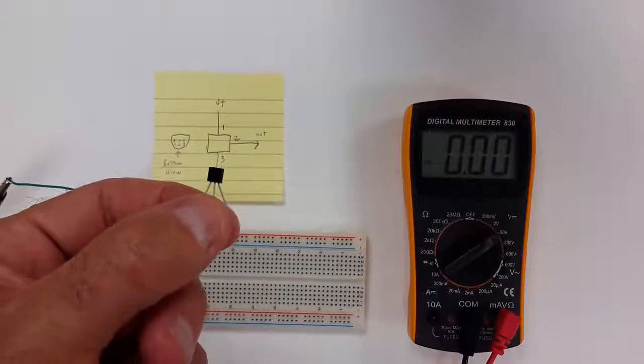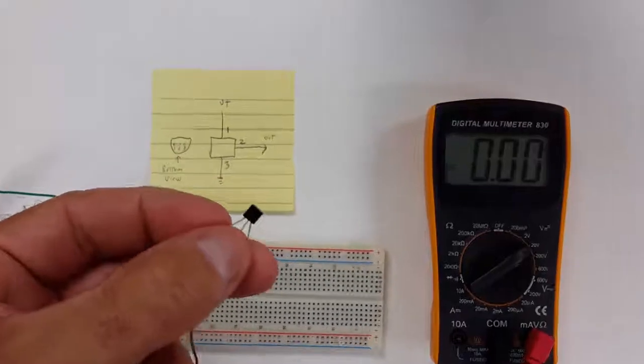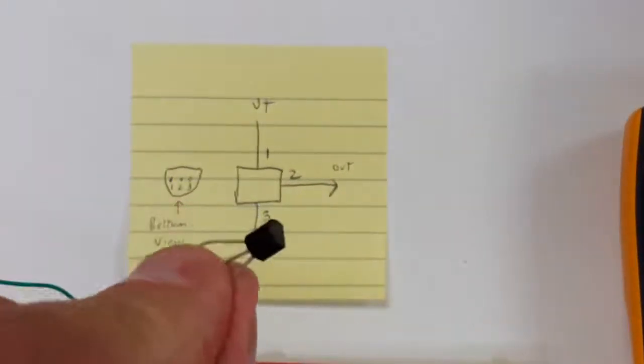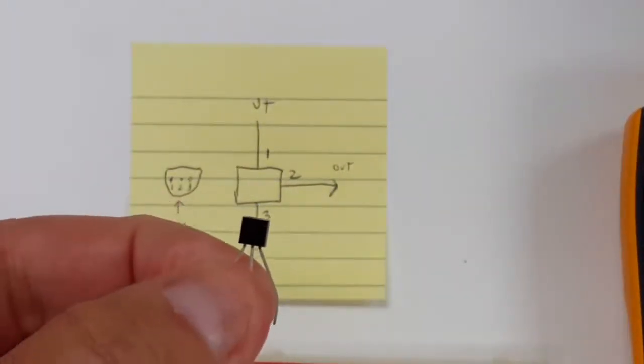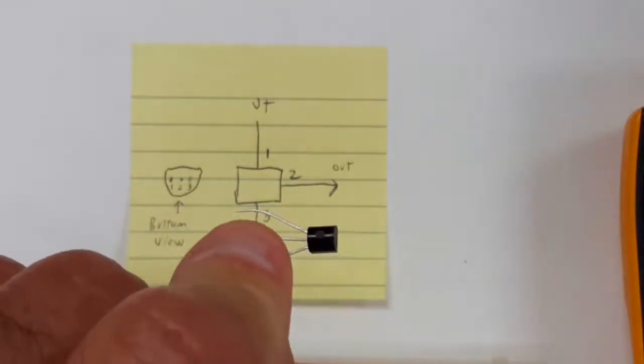Another sensor in the kit is a temperature sensor, and this is a solid state temperature sensor. It's really a fairly complex integrated circuit that measures temperature and outputs the temperature in volts.